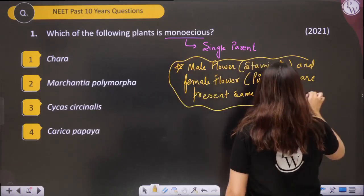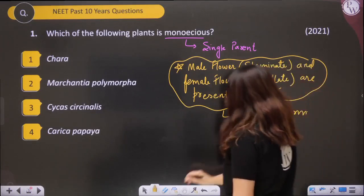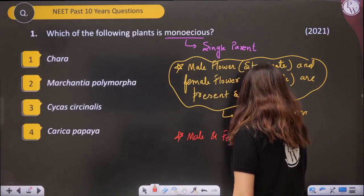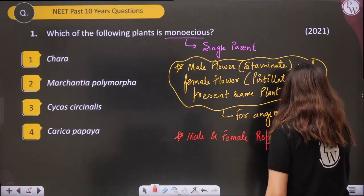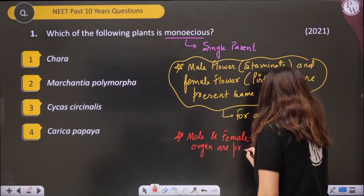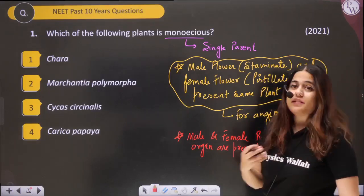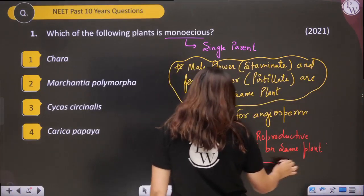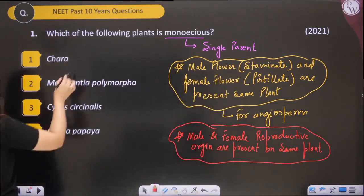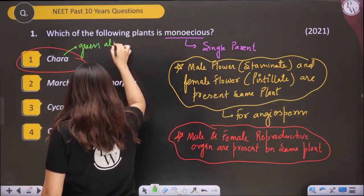In this plant, the male flower (staminate) and female flower (pistillate) are present on the same plant. This is about angiosperms. For angiosperms this is the definition of monoecious, but for other plants the definition is when male and female reproductive organs are present on the same plant. The answer will be Chara, which is a green algae.